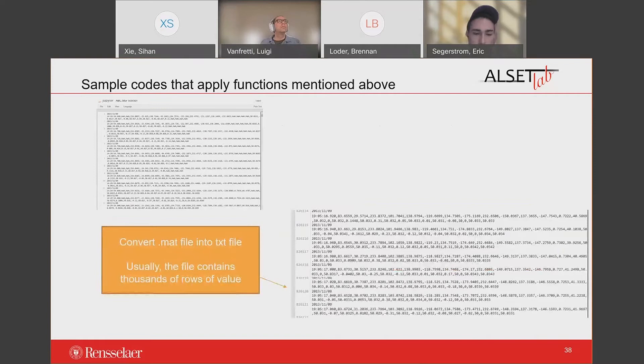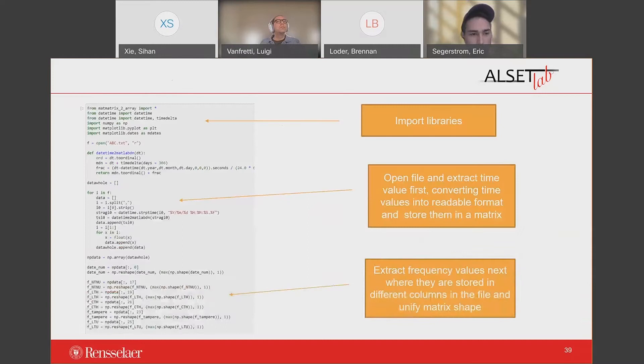Finally, I will display some code on cases that apply equations mentioned above. First, I'm going to convert the mat file into txt file. Then while I sort out this data, the first step is to extract the time value first and convert these time values into workflow format and store them in a matrix. Then I extract the frequency values where they are stored in different columns in the files, and I will unify the matrix shape.